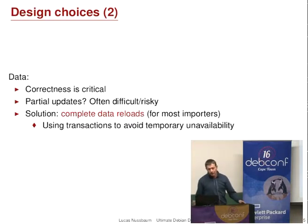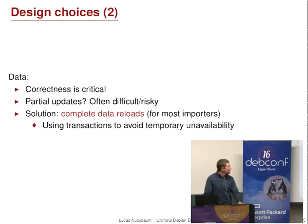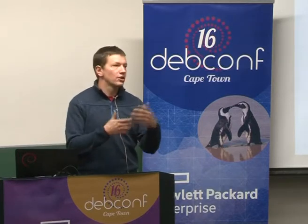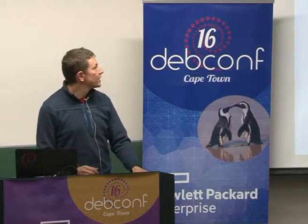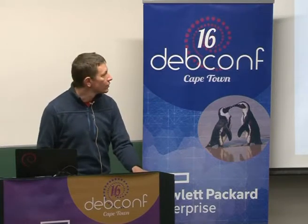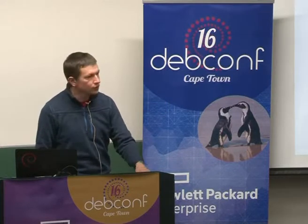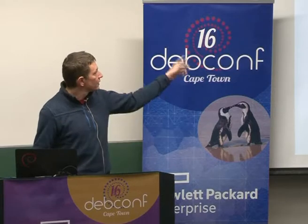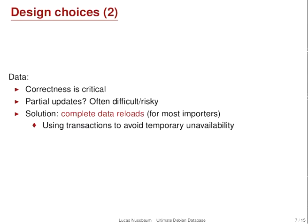Another design choice of UDD is that correctness is critical. So we don't do partial updates of data except in one case, because it's usually quite difficult to just figure out what's changed and apply the diff. We do complete data reloads for most importers. The only exception is the Bugs importer, because doing a full import requires reading a lot of separate text files, since bugs.debian.org uses text files as its main backend. So we update bugs that get updated, and do complete data reloads only every few hours. This is completely hidden from the user, because we use transactions to avoid having empty tables at any point.